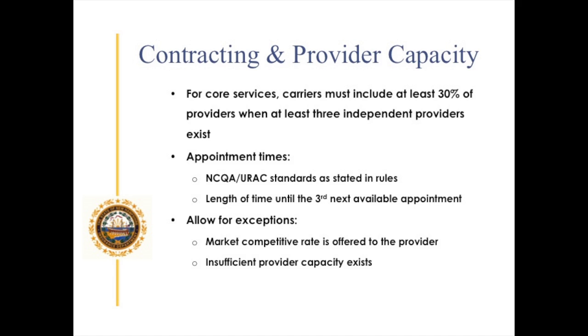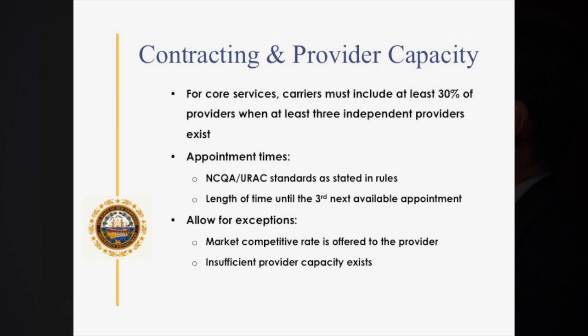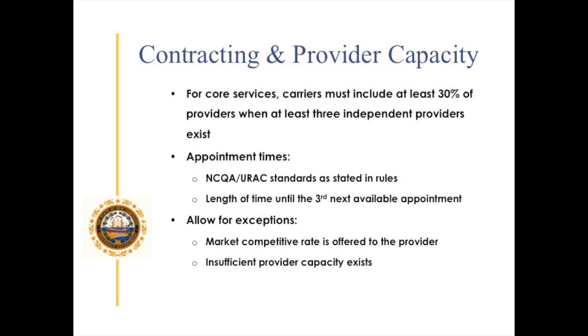The big challenge with network adequacy is contracting and provider capacity. Contracting refers to the network development that takes place between an insurance carrier and a healthcare provider — they go through a contracting and negotiation process to determine reimbursement rates. Network adequacy can shift the leverage in those negotiations. To encourage a competitive environment, we don't want to go too far with our network adequacy requirement. For core services — those you should be able to get on a local basis — carriers must include at least 30% of the providers when at least three independent providers exist. If all providers have gotten together under a single employment umbrella, this network adequacy requirement is going to be weakened.